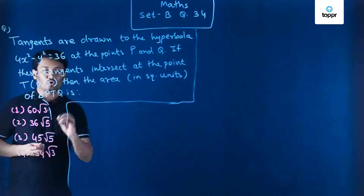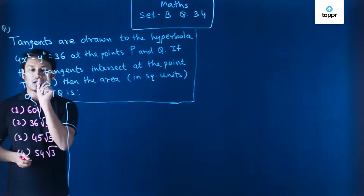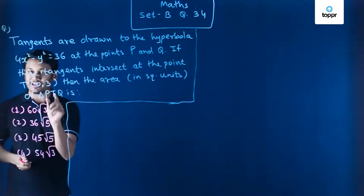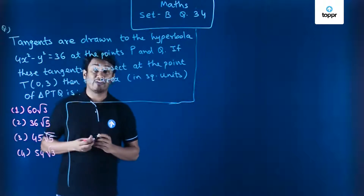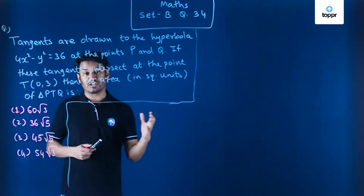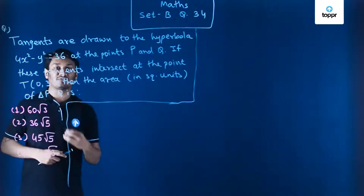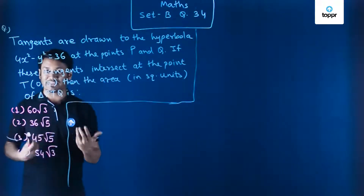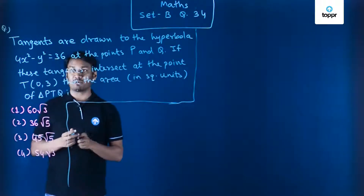To find the area of triangle PTQ, the coordinates of point T are already available to us. If we can find the coordinates of P and Q, we will have all three vertices of the triangle and can use the formula for the area of a triangle when all three vertices are given. Let's see how the coordinates of P and Q can be found.